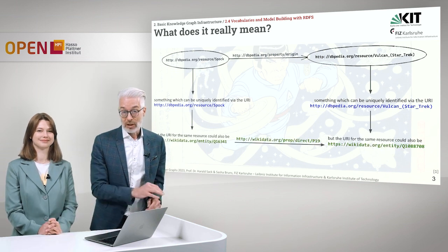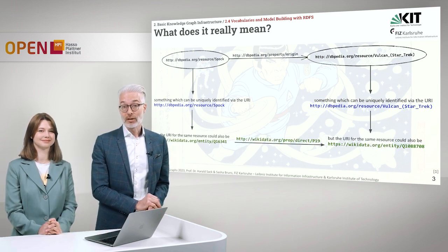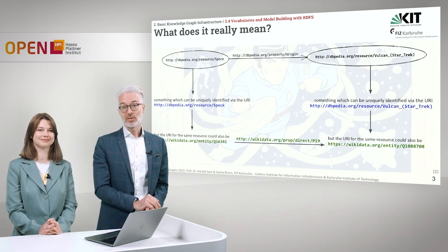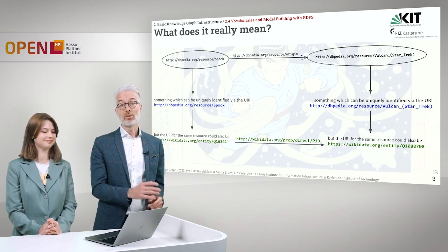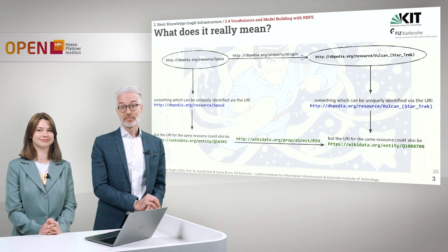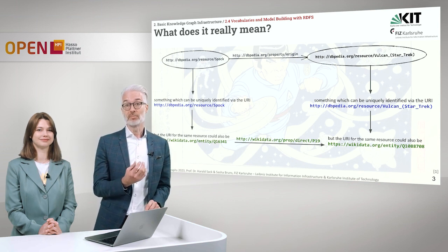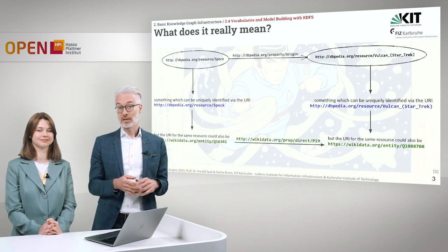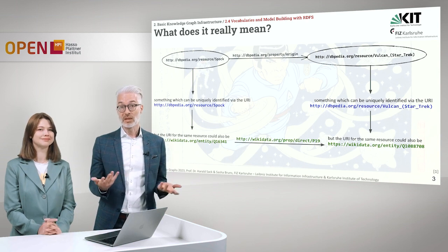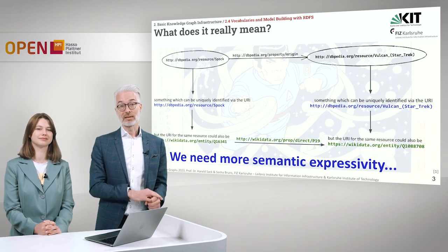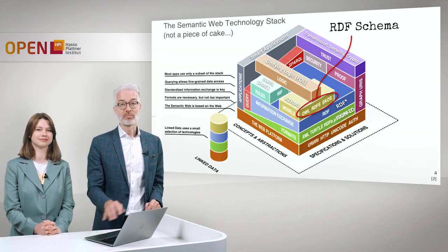However, what I can do is use completely different URIs to denote exactly the same thing. The first ones in blue refer to DBpedia, the second ones refer to Wikidata. But in both of these knowledge bases, there is a resource called Spock and also a resource called Planet Vulcan. The point is, if you really want to know what that means — beyond having a node connected via a property to another node associated with some URI where we have no idea what it means — we need some means to express more semantics. We need more semantic expressivity.